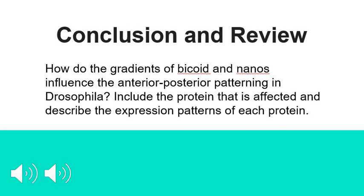With all this being explained, this concludes the anterior-posterior axis setup in Drosophila through morphogen gradients. As a good study tool, it would be good to answer the following question: How do the gradients of Bicoid and nanos influence the anterior-posterior patterning in Drosophila? Include the protein that is affected and describe the expression patterns of each protein.